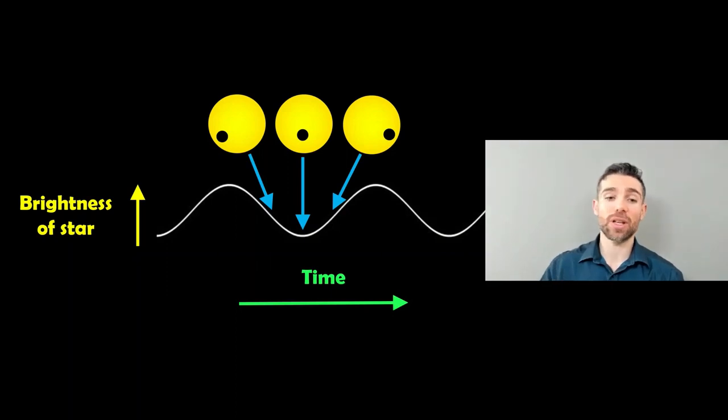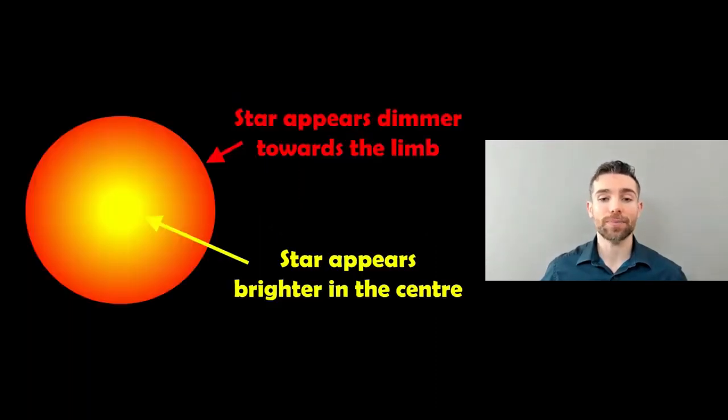When the star spot is directly facing towards us is when the star appears in its dimmest, compared to when it's more towards the outer parts or the edge of the star. The reason for that is that the star is not evenly illuminated. It's actually brighter in the center than it is towards the edge or towards the limb.